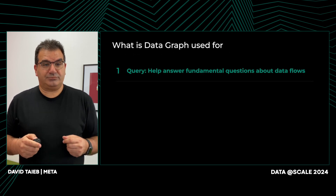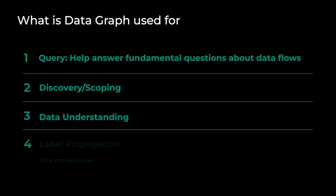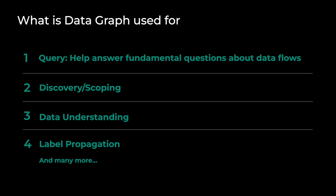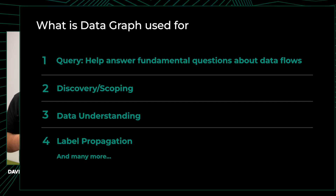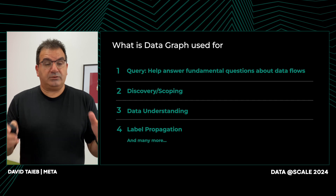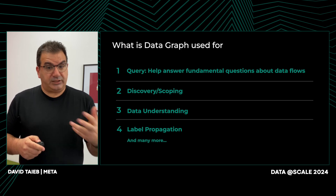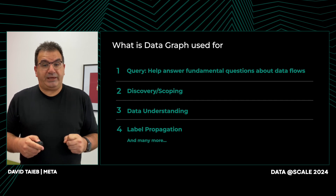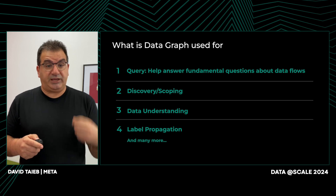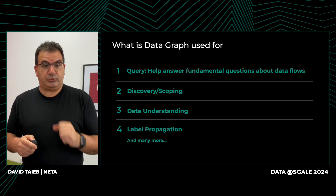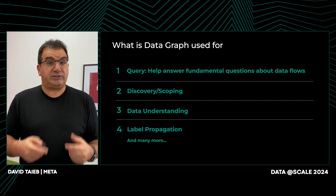So what is DataGraph used for? There are multiple use cases. The first and most common helps answer fundamental questions about data flow: does asset X flow to asset Y even though X and Y are not directly related? Does asset X contain sensitive data? For discovery and scoping, we start from a given set of root nodes carefully identified, and create a subgraph of downstreams by following data that has been copied into those downstream nodes. For data understanding, we ask: what is the real edge of the data, and are there cumulative cycles? Finally, label propagation — given a set of root nodes carefully labeled with annotations, we propagate those annotations according to a given set of rules, which can be very complicated.